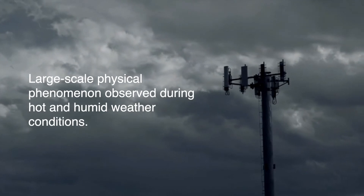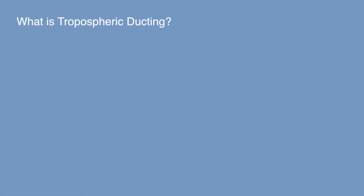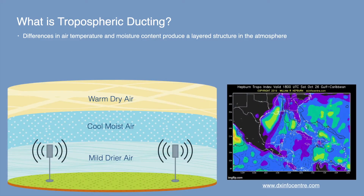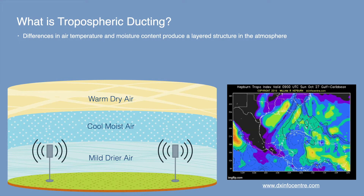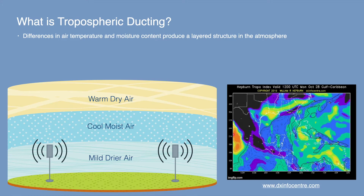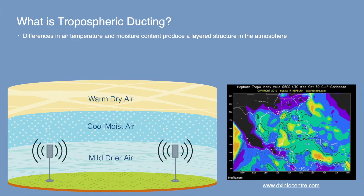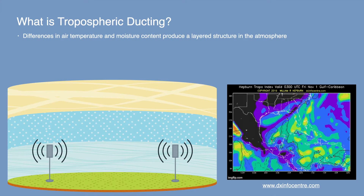Let's dig deeper into the tropospheric ducting phenomenon. Ducting occurs when differences in air temperature and moisture content produce a layered structure in the atmosphere. In the diagram on the left, there is a pocket of dry air surrounded by cool moist air surrounded by warm dry air. When this occurs, the refractive index of the atmosphere increases and causes RF signals to bend and propagate greater distances. The map on the right shows tropospheric ducting conditions over time for the Gulf region of the US, Mexico, and Caribbean — red and yellow indicate strong levels of ducting. The map is courtesy of William R. Hepburn's DX Info Center. This phenomenon affects all frequencies and RF signals can travel hundreds of kilometers.